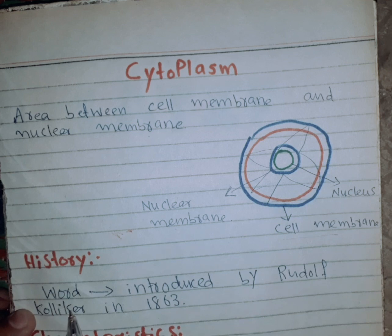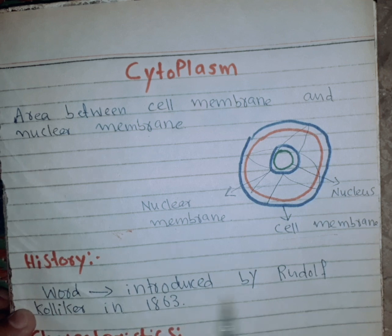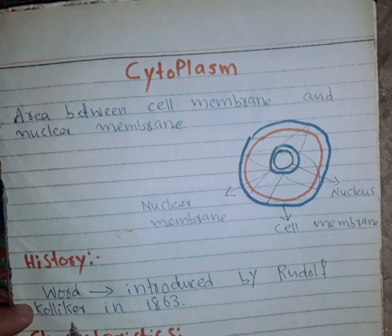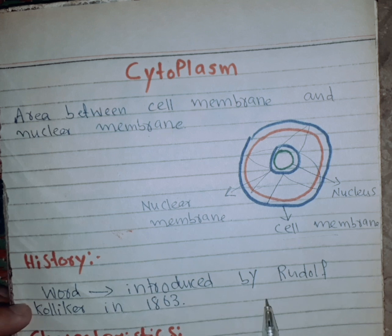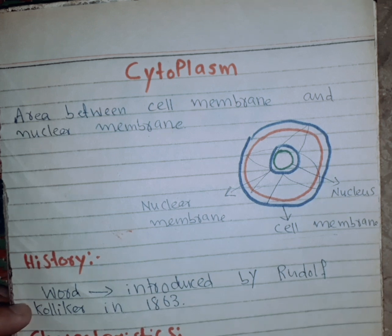Cytoplasm was introduced by Rodolphe Koliker in 1863.